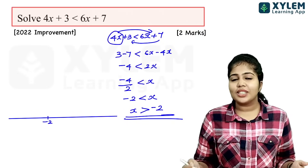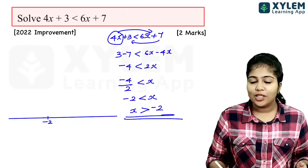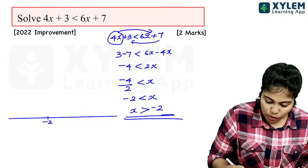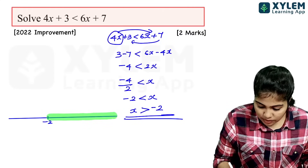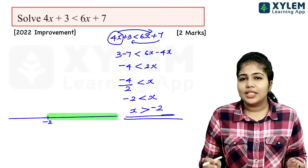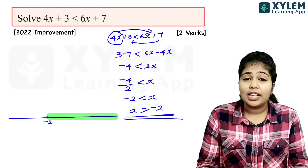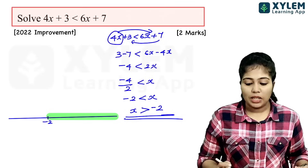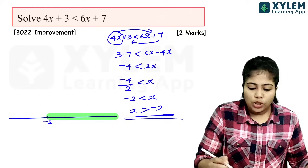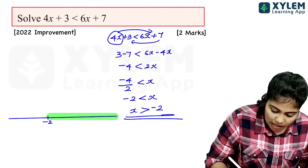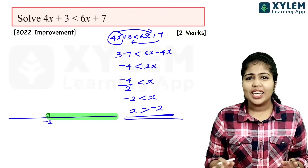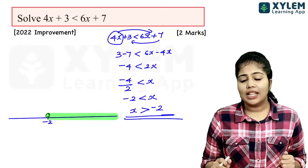We write minus 2 on the number line. Since x is greater than minus 2 — strictly greater — we put an open circle at minus 2. The shading goes to the right. This is clear — this is the number line.